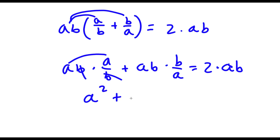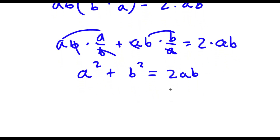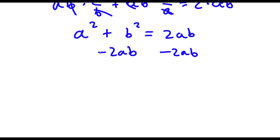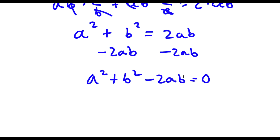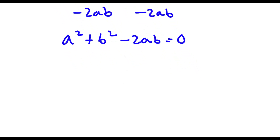So I have a squared plus — and for the second term, the a's cancel out, and b times b is b squared — equals 2ab. Now I'm going to subtract 2ab on both sides, so I get a squared plus b squared minus 2ab is equal to 0. Now a squared plus b squared minus 2ab is actually the same thing as a minus b squared.